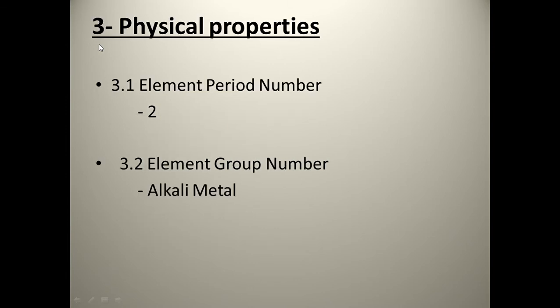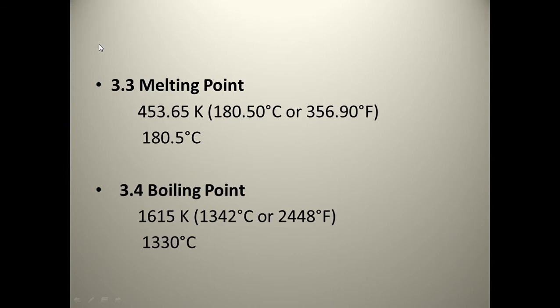The physical properties of lithium: its period number is 2 and its group is alkali metal. The melting point of lithium is equal to 453 Kelvin and 180.5 degrees Celsius. The boiling point of lithium is equal to 1615 Kelvin and 1330 degrees Celsius.